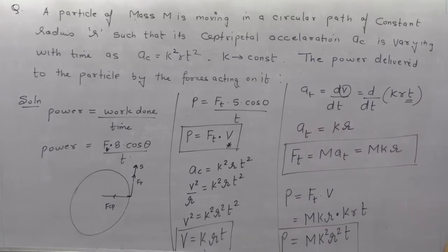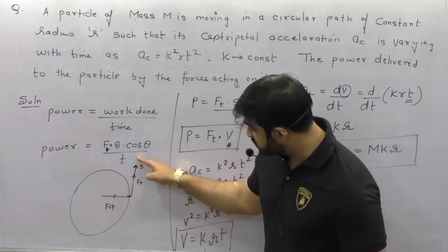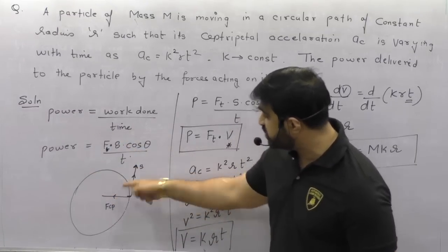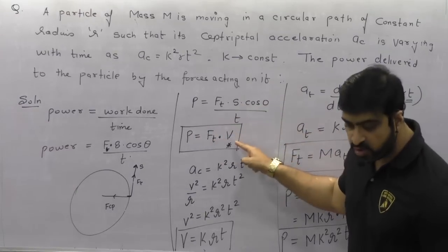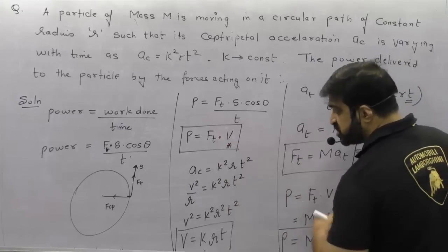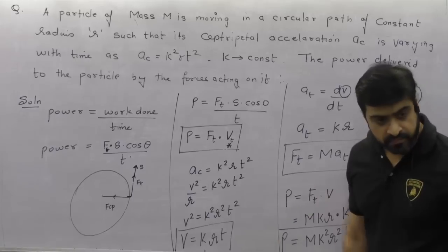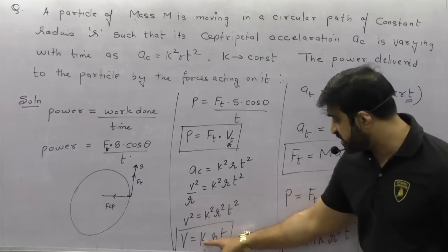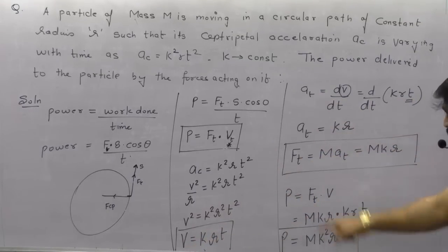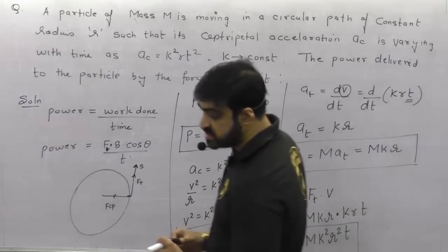To summarize: power = work/time; centripetal force does zero work (angle 90°); power is delivered by tangential force. Displacement/time is velocity, so power = F·V — always remember power = F_T·V_T. This formula was used: from centripetal acceleration K²RT², we derived V = KRT, then a_T = KR, then F_T = MKR, and power = MK²R²T. This question was asked in CET 2015.